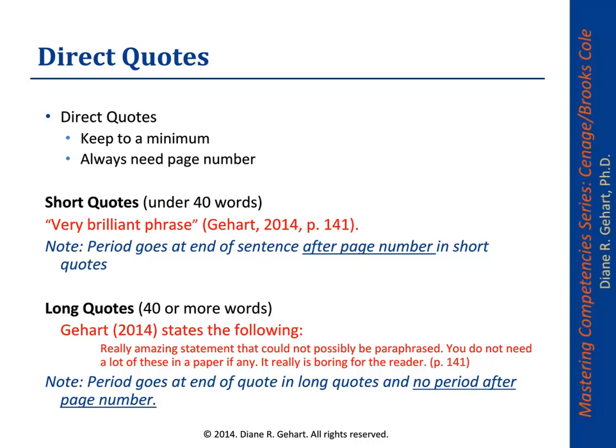In contrast, for long quotes of forty or more words, you're going to introduce it and then do an indented block paragraph — the entire text of the long quote is indented. You put the direct quote in, then a period for that long quote, and then the page number or page numbers with no period after it. Generally you have introduced the author and year above the block quote. If not, you would put the author and year in parentheses with no period after it. This is the format for long and short quotes — it's detail-oriented, but you want to get it right, especially those page numbers for direct quotes.